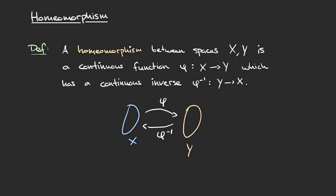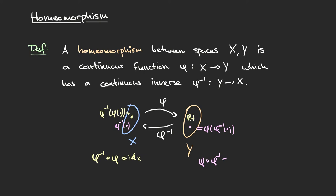The fact that these functions are inverse to one another means that if we have any point in the space X and we take phi to Y and look at the image under phi of this point, and then we take phi inverse back again, we land back exactly at the same point. So phi inverse of phi of this point is just equal to the original point. Similarly, phi of phi inverse of a point in Y equals the original point. More succinctly, phi inverse after phi is just the identity on X, and phi after phi inverse is the identity on Y.